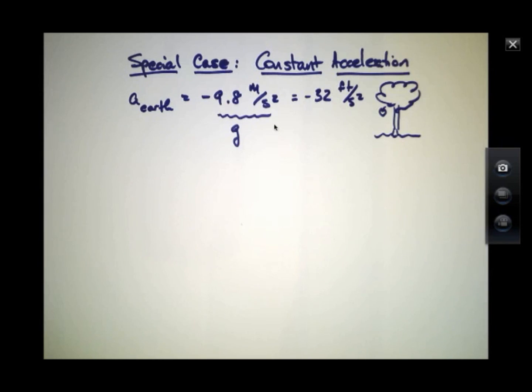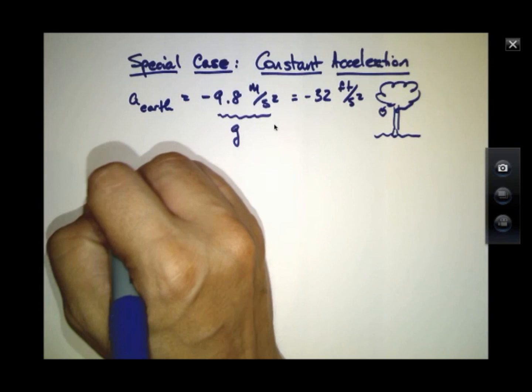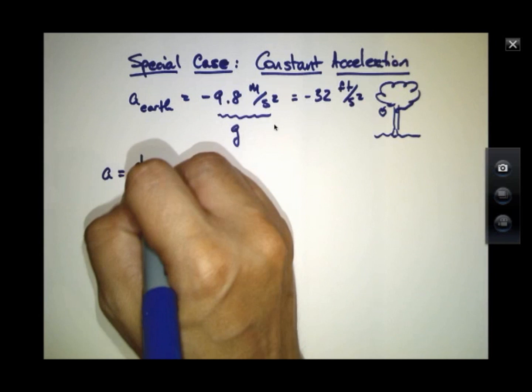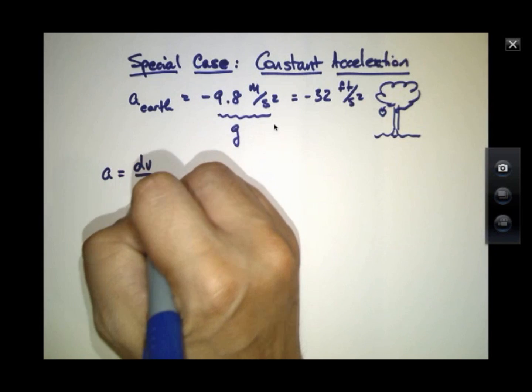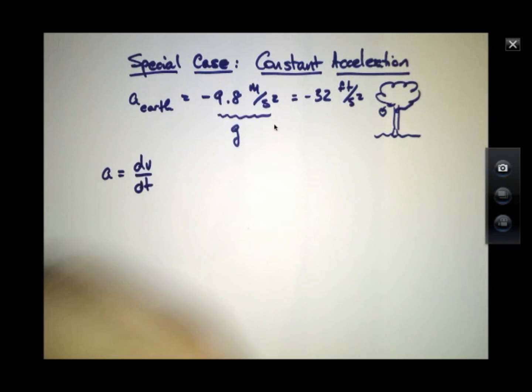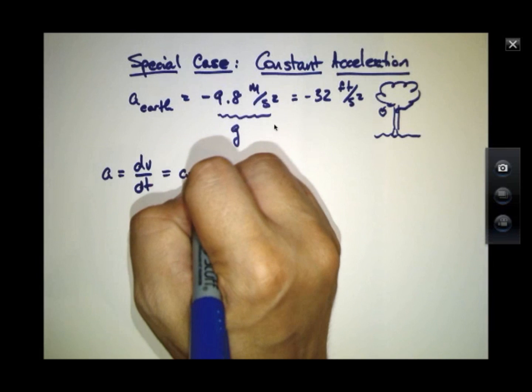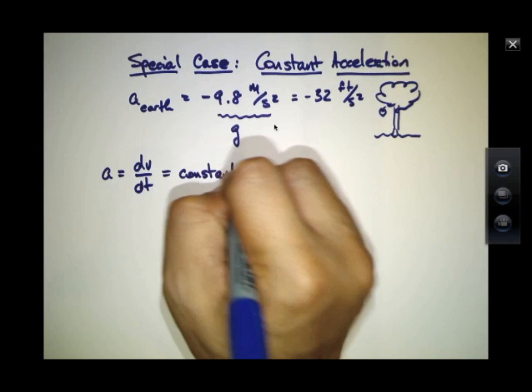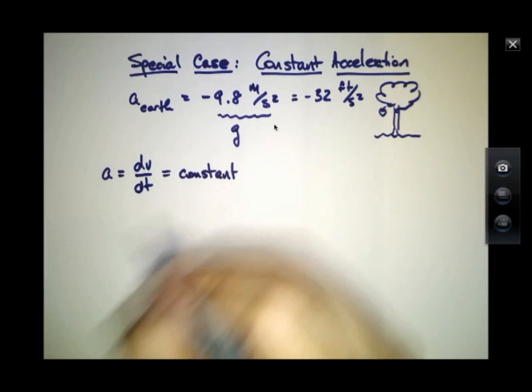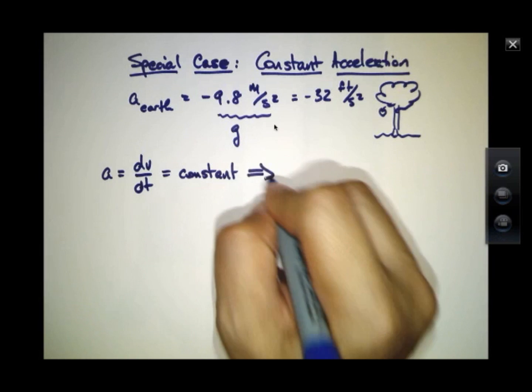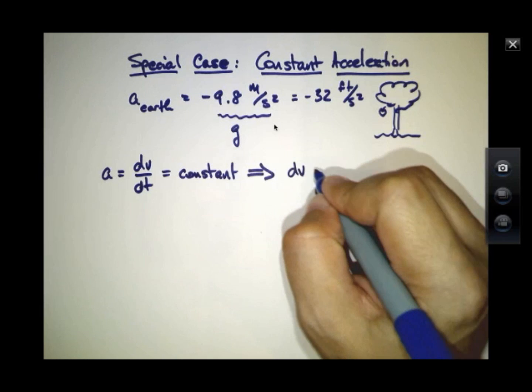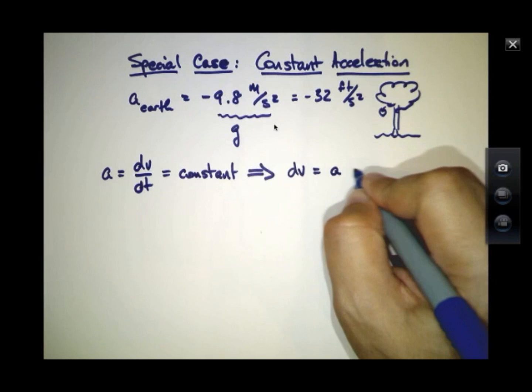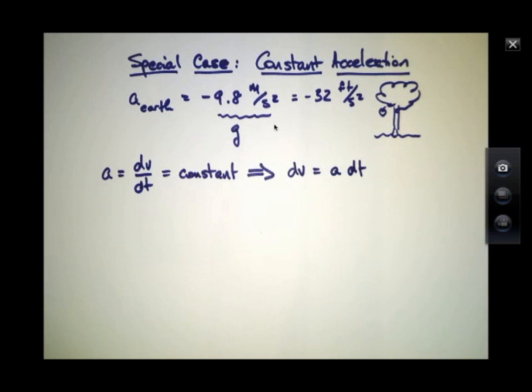So now why is this a particularly important special case for us? Because we should remember that a is the derivative with respect to time and velocity, and if we're now saying that that's a constant, well, this has an implication. So that will lead to dv equals a times dt, multiply both sides by dt.